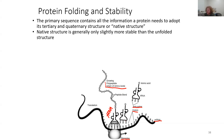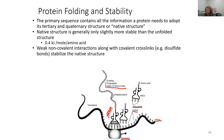The native structure is generally only slightly more stable than the unfolded structure of a protein — approximately 0.4 kilojoules per mole per amino acid. Weak non-covalent interactions along with covalent cross-links like disulfide bonds stabilize the native structure of a protein.